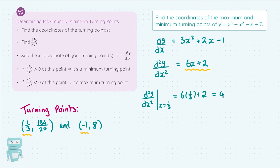Subbing my first x-coordinate into the second derivative, I get a result of four. The determining factor is if this is less than or greater than zero. If the second derivative is greater than zero at this point, you have a minimum — so greater than zero means minimum, counterintuitive there. Four is greater than zero, and because it's greater than zero, I have a minimum turning point at x equals one third and y equals 184 over 27. Because the second derivative at one third equals four, which is greater than zero, it means we have a minimum.